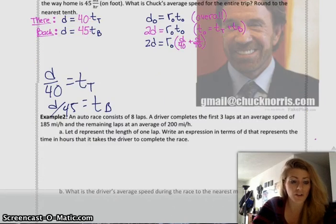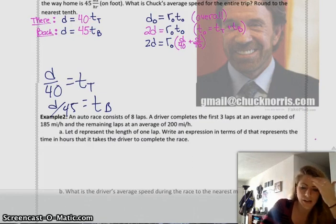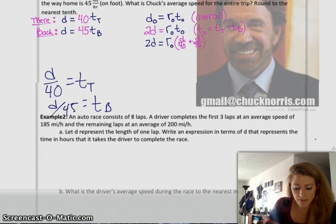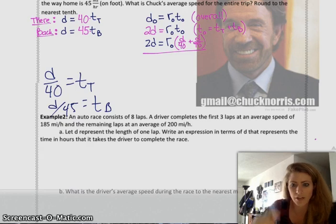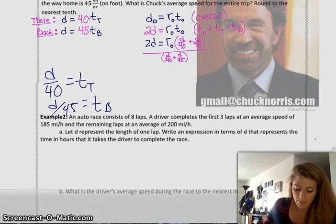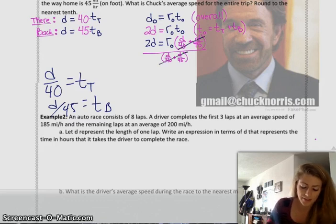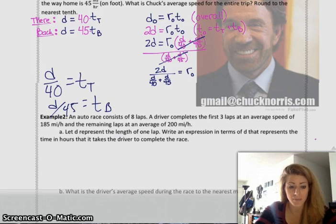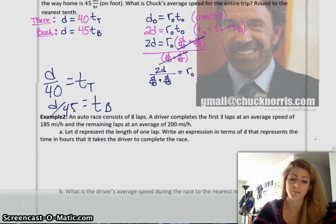So, I'm just gonna replace those in the equation that we were trying to solve. It's like a massive system of equations, kind of. Okay. Now, we just need to solve for our rate, our overall rate. So, I'm going to leave that on the right hand side. I'm gonna divide both sides by that funky D over 40 plus D over 45. When I do that, my right side cancels, and then on my left side, I have 2D over that D over 40 plus D over 45.